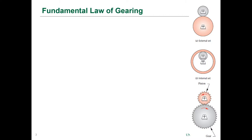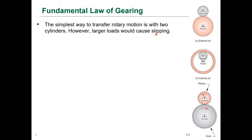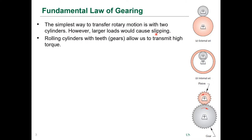Now we'll cover the fundamental law of gearing. Ideally, if we could have two rolling cylinders that didn't slip with one another, that would be a pretty ideal way of transmitting torque. But in higher load applications you can get slipping, and if you need the output to be phased with the input, you wouldn't be able to use simple rotating cylinders.